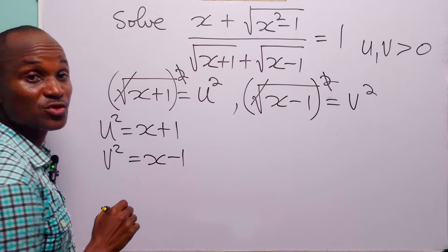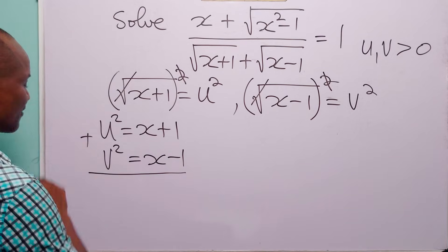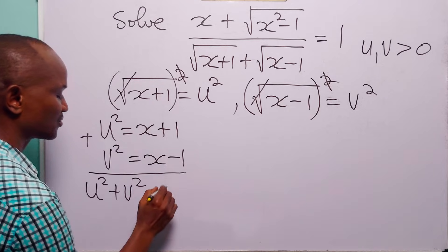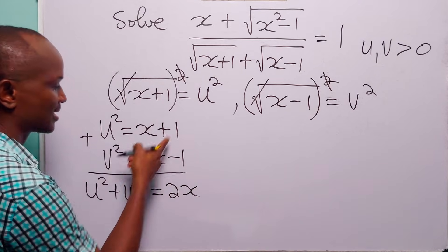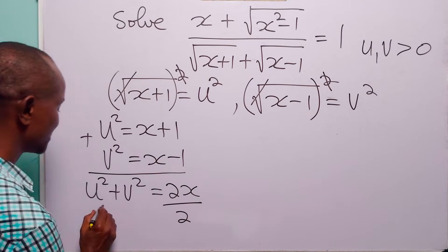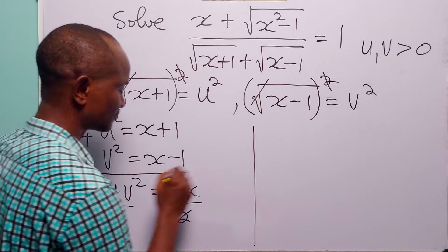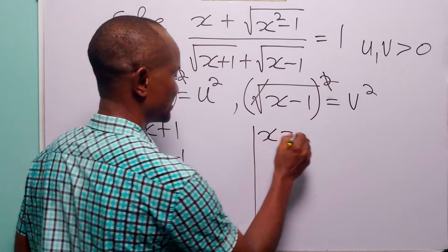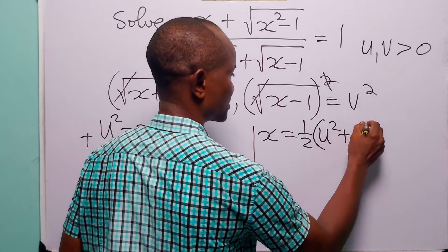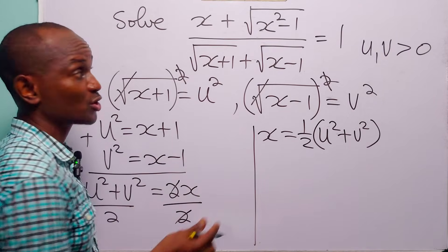When we do the same thing to the v equation, we get v squared is equal to x minus 1. Now let us add these two equations. When we do that, u squared plus v squared is equal to 2x, since 1 minus 1 equals 0. Dividing both sides by 2, we find that x is equal to half times (u squared plus v squared).